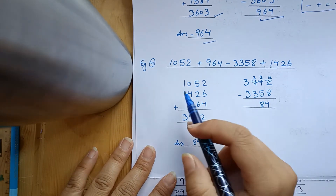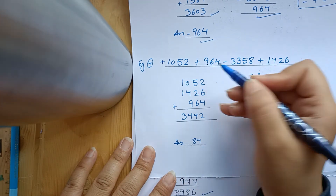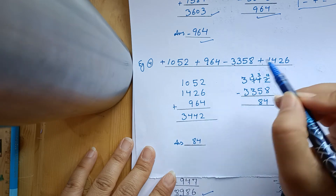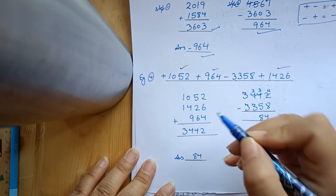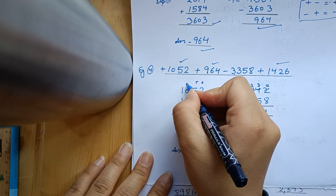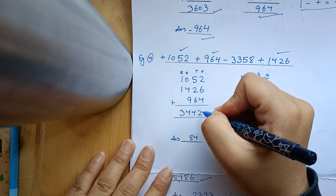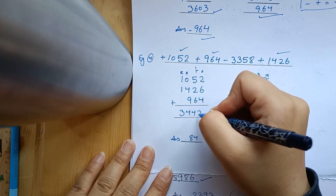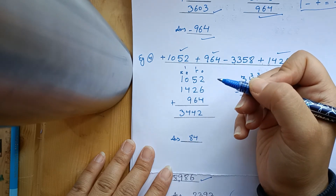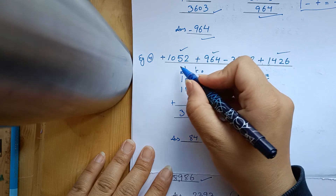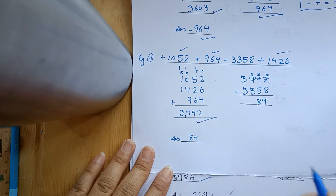Let's take one more example. Here the signs are: first number is plus, second is plus, one number is minus, one is plus. We will take all the plus-sign digits together. Set the place value as some are thousands and some are hundreds. Six plus four is ten, ten plus two is twelve. Six plus five is eleven, eleven plus one is twelve, twelve plus two is fourteen. Nine plus four is thirteen, thirteen plus one is fourteen. One plus one is two, plus one is three. So our answer is three thousand, four hundred and forty-four.